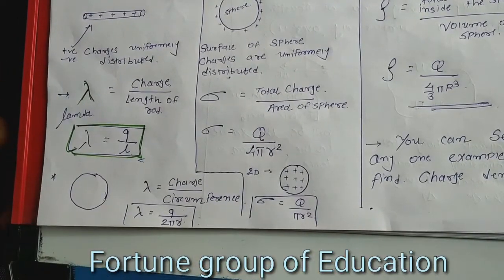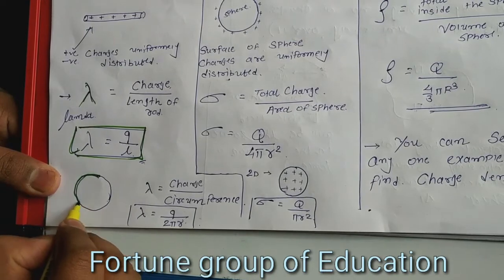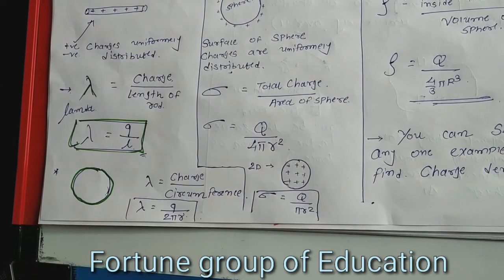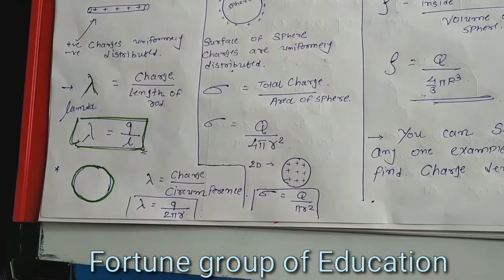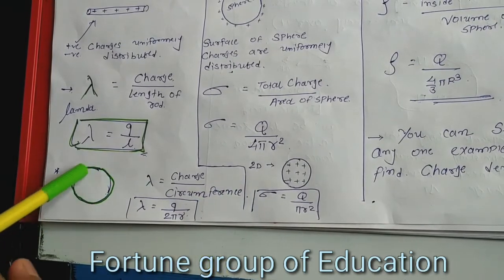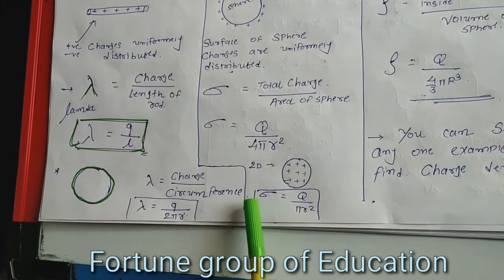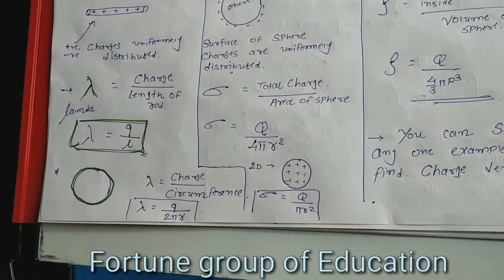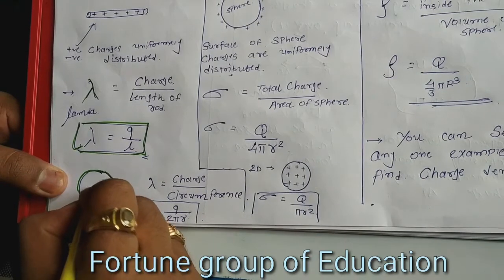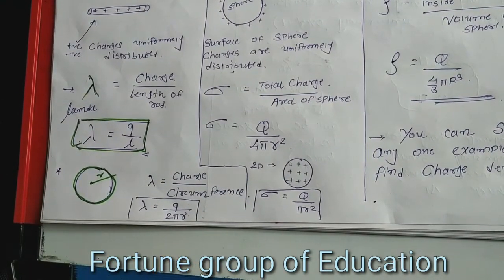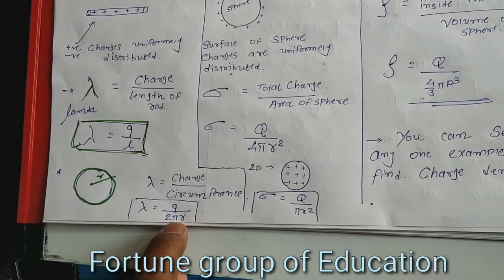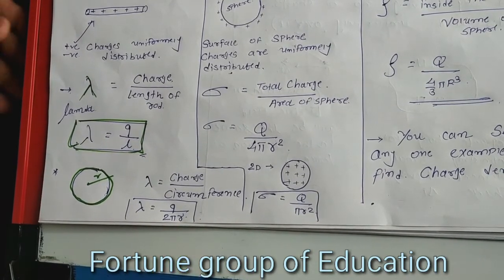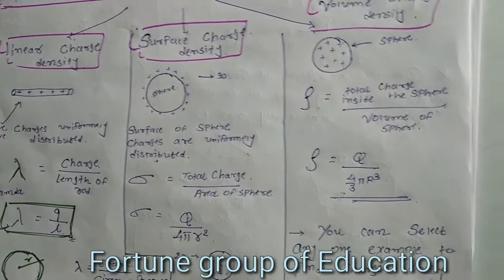If we consider a ring, the linear charge density is lambda equal to the charge upon the circumference of the ring. The circumference of the ring is L = 2πr, where r is the radius of the ring. So for a ring, λ = Q / (2πr).